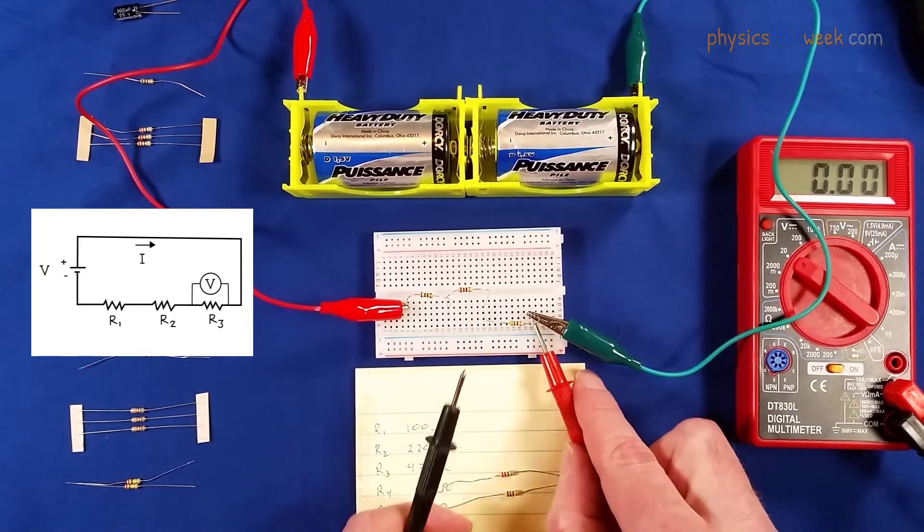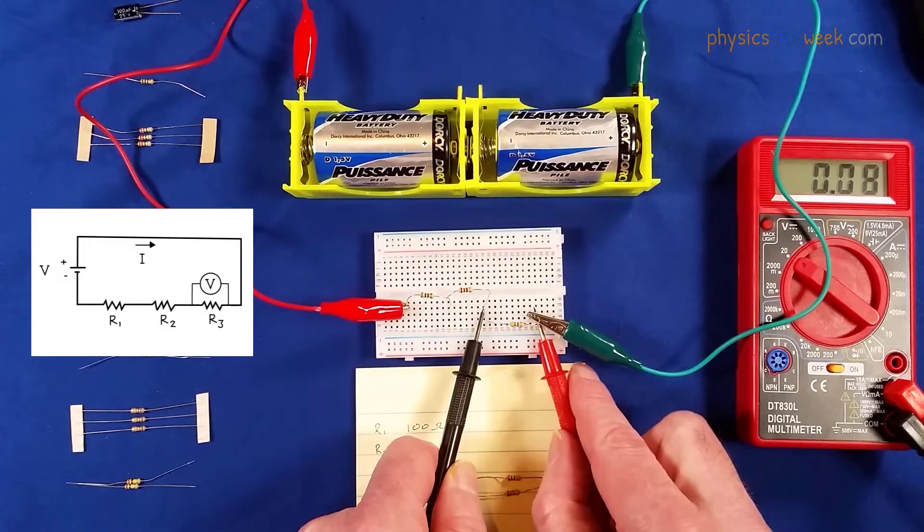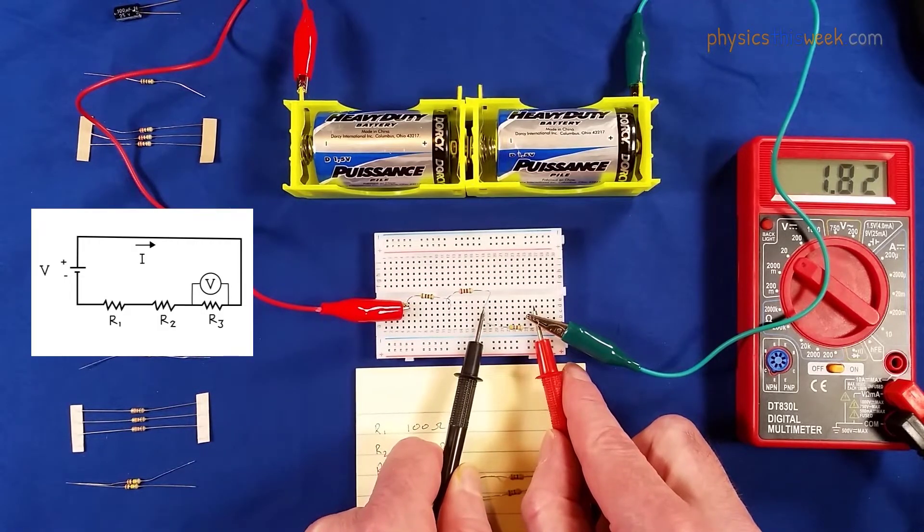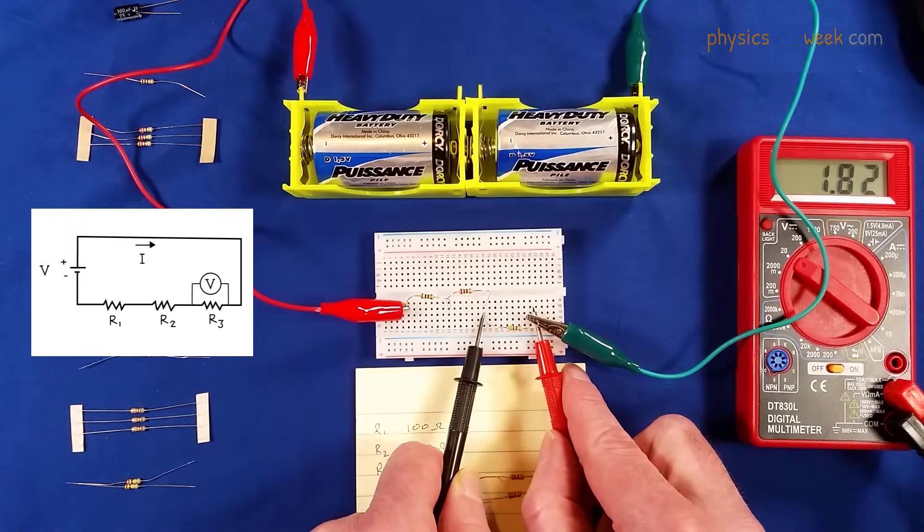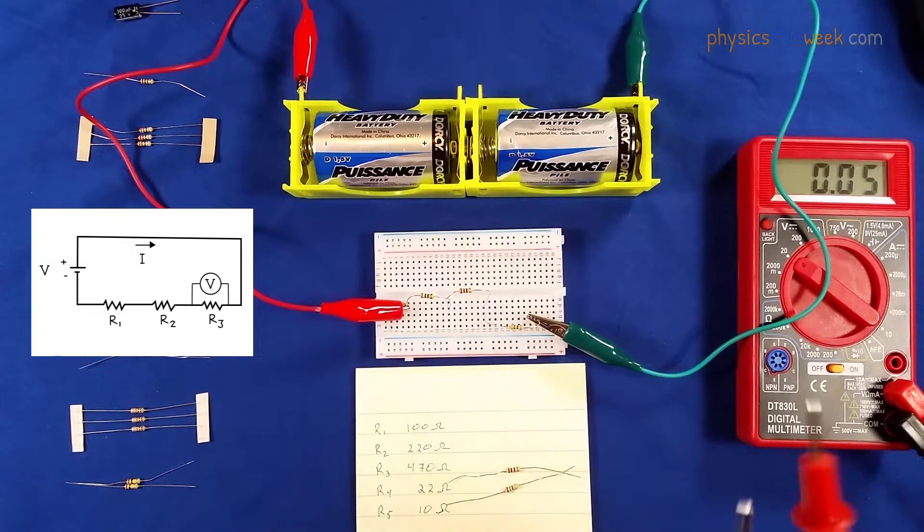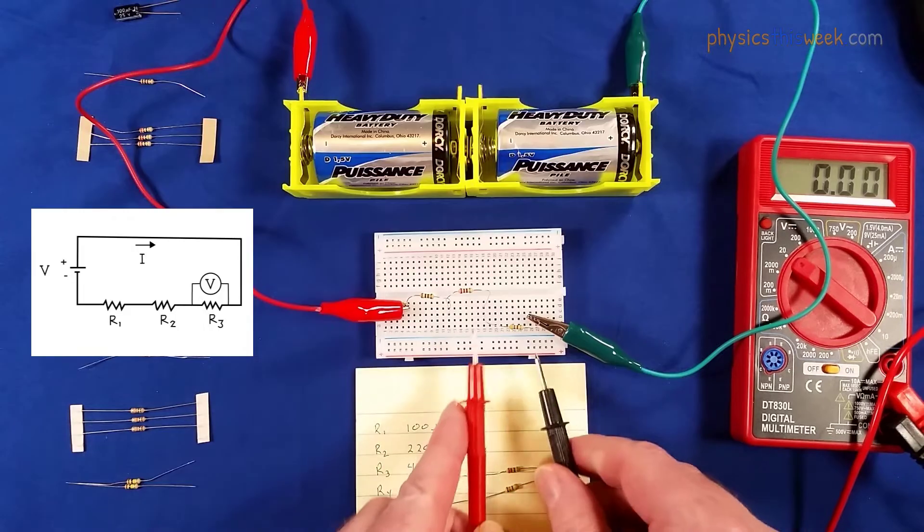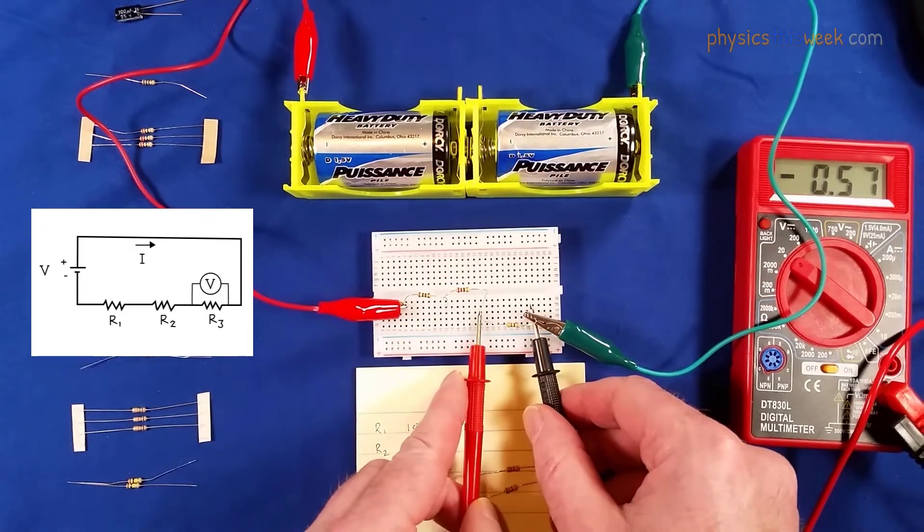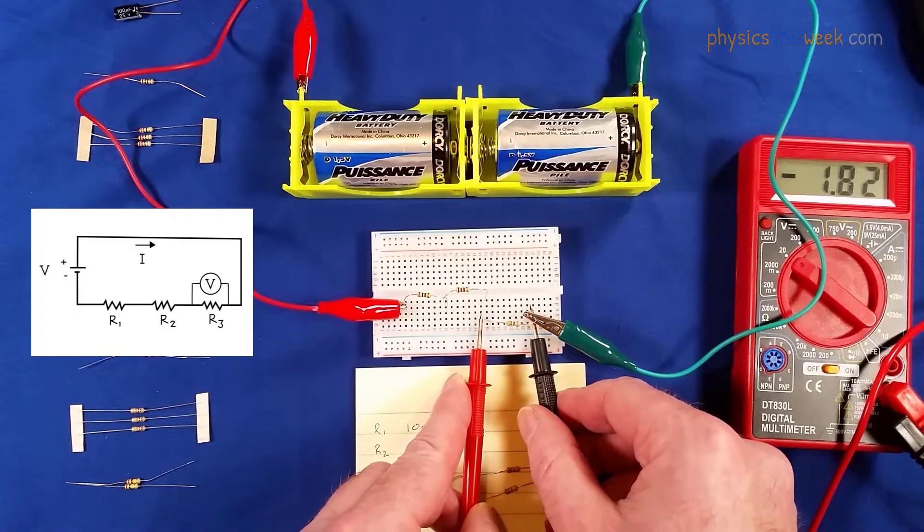Notice here I'm going to measure from this side to this side and I get 1.82 volts. You can write that down in your book. However, if I measure it the opposite way, I get almost exactly the same value but with a negative sign.